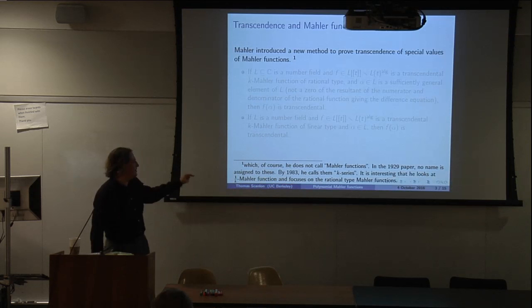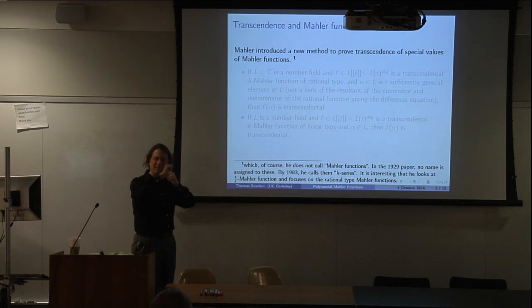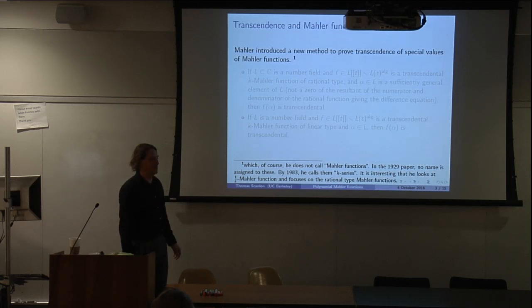The interesting point is that for Mahler, what I call a K-Mahler function, he would have called a 1-over-K series, because he writes the equation with T to the K on the other side. This confusion does show up in some papers in the literature where people state only the case where T to the K is on the right side of the equation — and then there aren't that many functions to which the theorem applies. If you move it to the other side, it actually starts to apply to something.